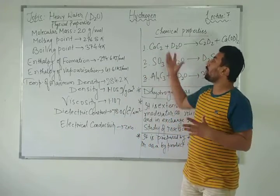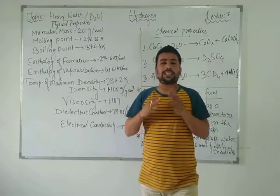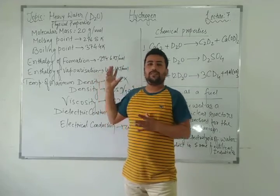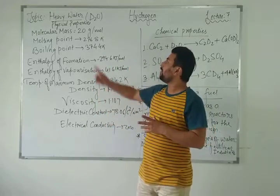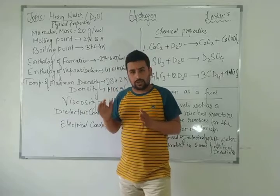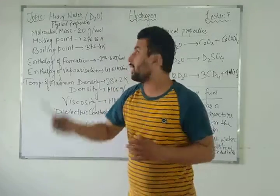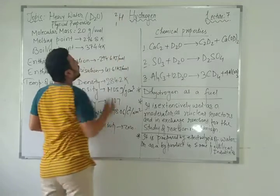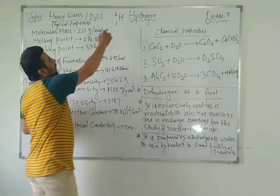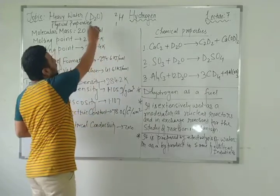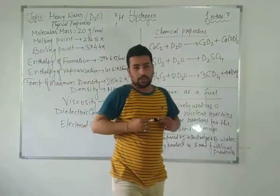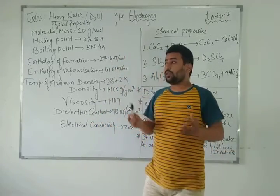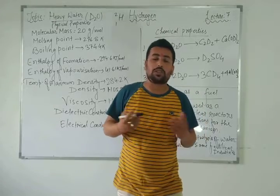In this seventh lecture we are going to discuss about heavy water. First of all, what is heavy water? It is deuterium oxide. Just like when oxygen reacts with deuterium — D here means deuterium, which has a molecular mass of 2. Deuterium oxide is also known as heavy water. H₂O is normal water and deuterium oxide is heavy water.